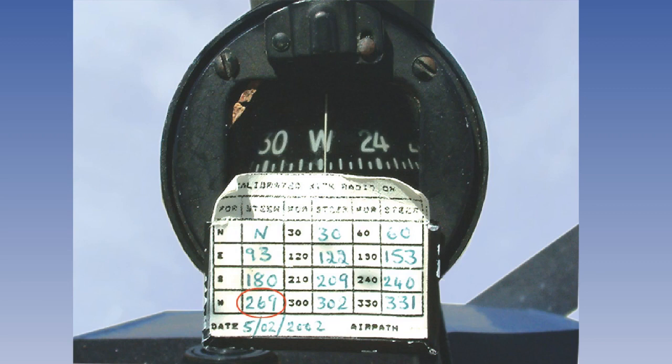The compass deviation is recorded on a deviation card, and an example of this can be seen on screen. The deviation value is usually recorded over several headings. The example here shows a deviation for every 30 degrees of heading.